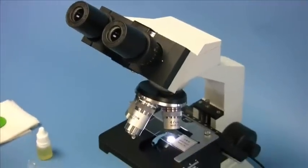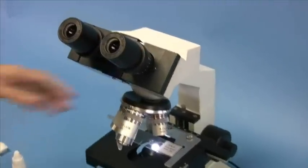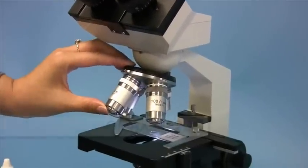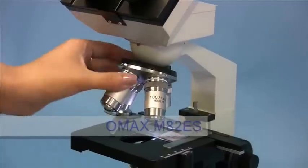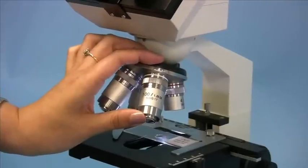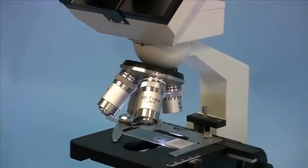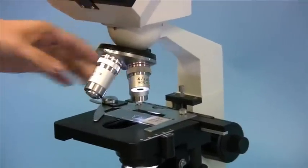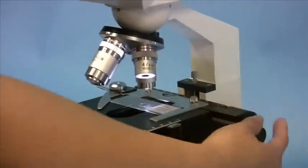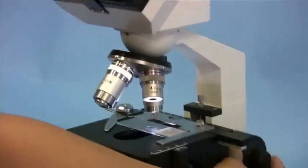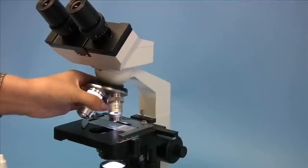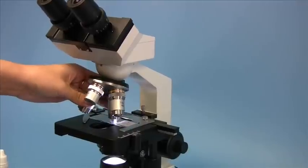Specimen might differ in size, so you might want to use different objectives, such as the 40x or the 100x. Before using them, make sure that the spring moves smoothly and is not stuck. The proper way of focusing is to start using the 10x objective. Use the coarse and fine focus adjustment knobs. Once you get the image focused under the 10x objective, you can turn the 40x objective into position.